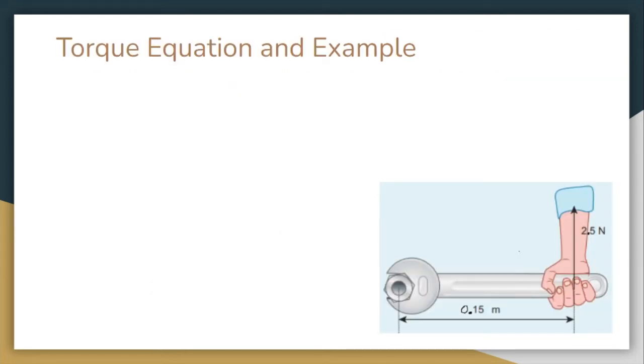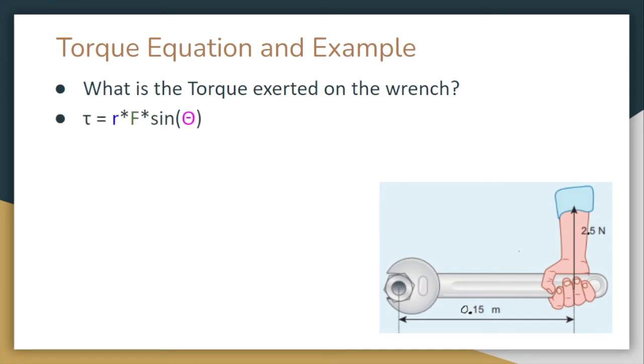So let's look at another example, but this time we're going to do some math. So let's figure out what the torque exerted on the wrench below is. We know that torque is equal to R times F times sine of theta. The R value is going to be 0.15 meters because that's the distance that we are from that pivot point. The F is 2.5 newtons and the angle, it looks like it's perpendicular, is going to be 90 degrees. So when we multiply all this stuff together, we find out that the torque should just be 0.375 newton meters, which is a pretty small torque, but we're also applying a very small force.